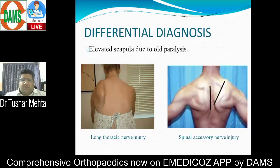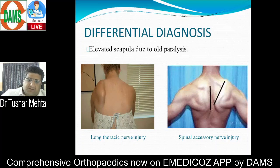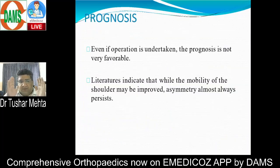Two differential diagnoses to consider: first is long thoracic nerve palsy — the nerve of Bell, or nerve to serratus anterior (C5, C6, C7) — where the medial border of the scapula becomes prominent when pressing against a wall, causing winging. Second is spinal accessory nerve palsy causing trapezius palsy and winging. There are thus two types of winging: one due to serratus palsy, one due to trapezius palsy.